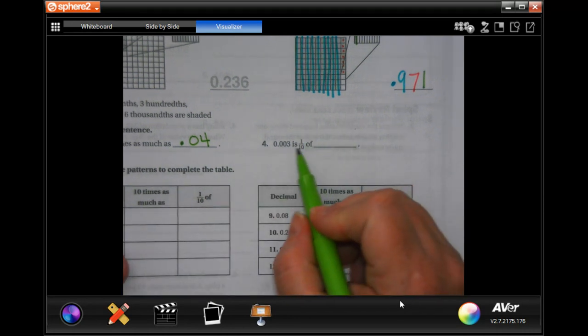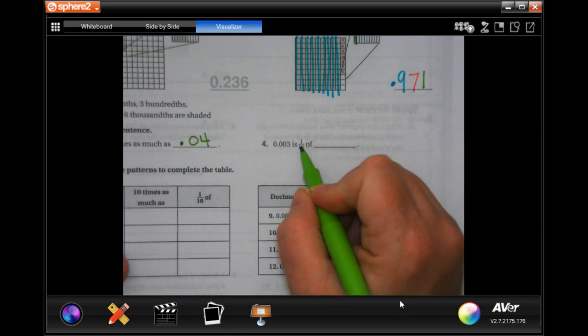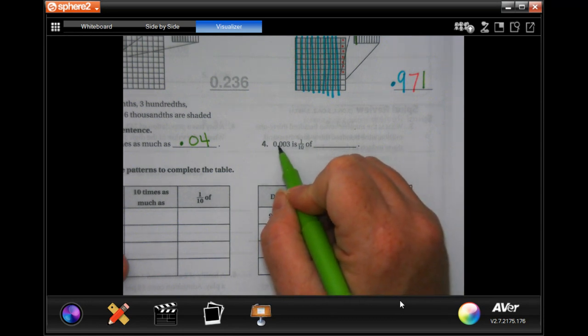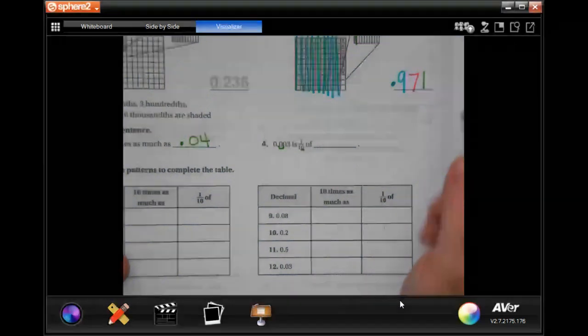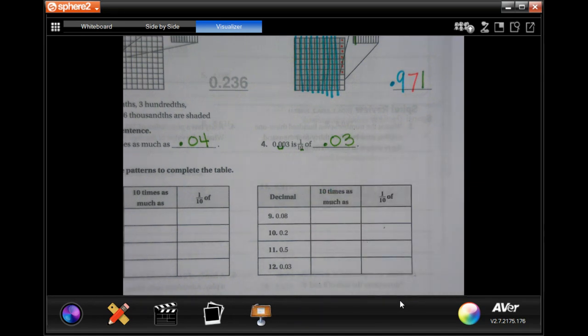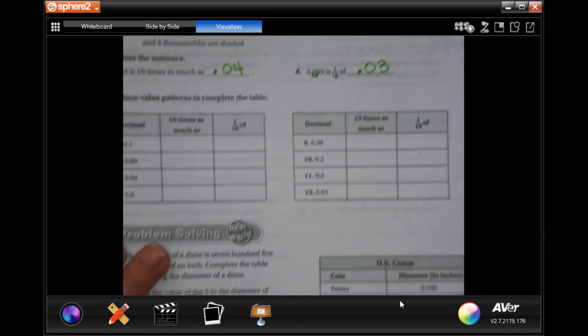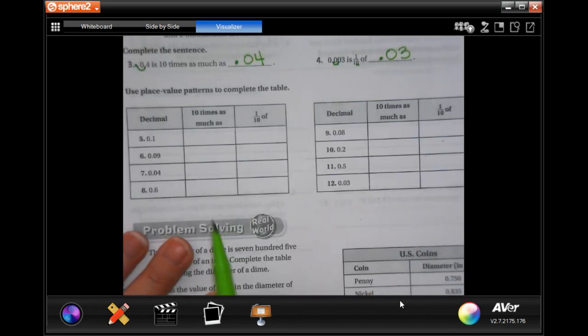It's saying that three thousand is one tenth of, so we're going to move that decimal one time, one zero one time. So now we're going to have point zero three. So when it's talking about ten times as much as, then your decimal is going to get smaller. When it's talking about one tenth of, your decimal is going to get bigger.